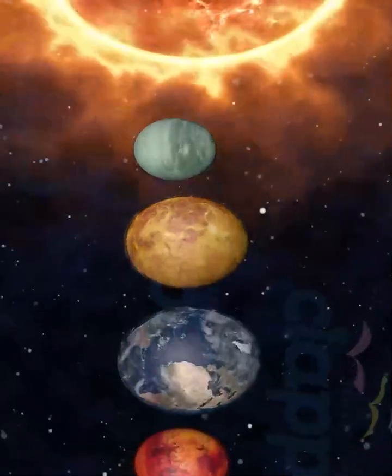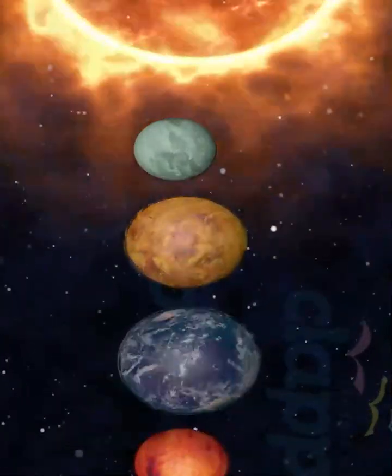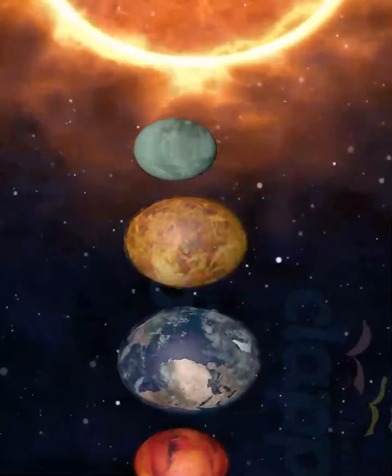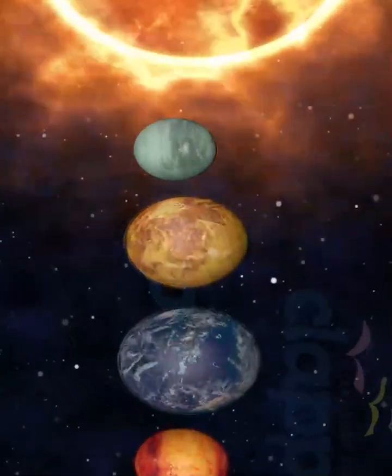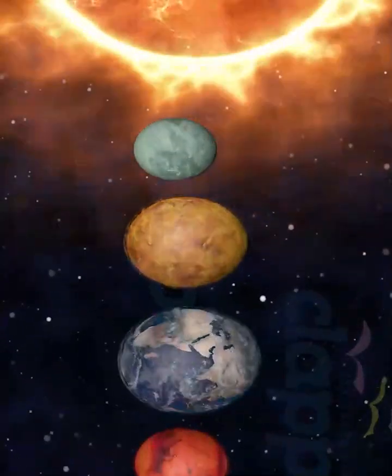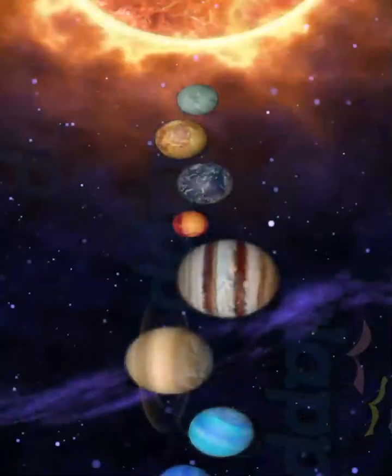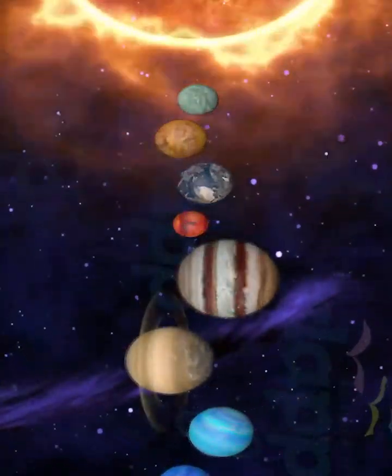Earth is one of the four terrestrial planets in the solar system. Earth is the largest and most massive of the four terrestrial planets, and the densest planet in the solar system.